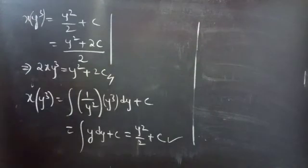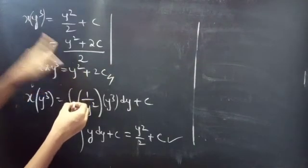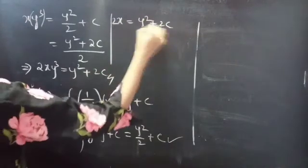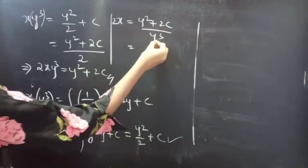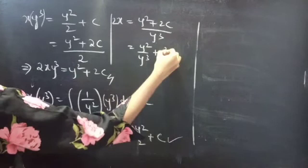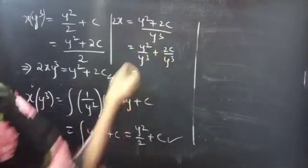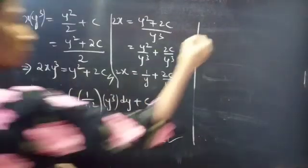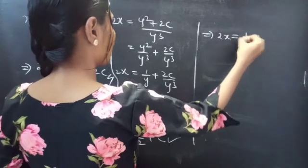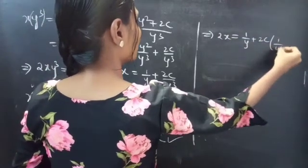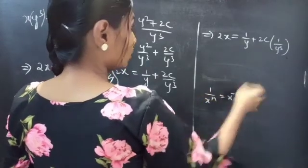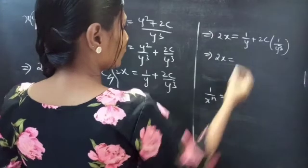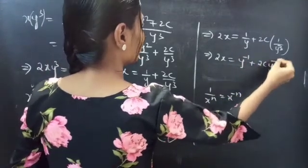This is the required general solution. Or, taking 2 to the LHS and y³ to the RHS, we get 2x = (y² + 2c)/y³. Since we have two terms in the numerator and one term in the denominator, we can split: y²/y³ + 2c/y³ = 1/y + 2c/y³. So 2x = 1/y + 2c·y⁻³, since 1/yⁿ = y⁻ⁿ.